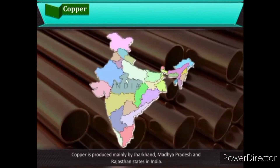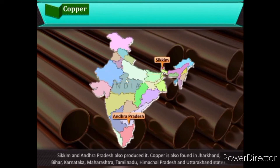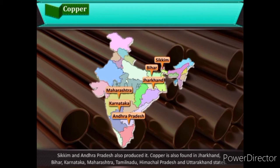Copper is produced mainly in Jharkhand, Madhya Pradesh, and Rajasthan. Sikkim and Andhra Pradesh also produce it. Copper is also found in Jharkhand, Bihar, Karnataka, Maharashtra, Tamil Nadu, Himachal Pradesh, and Uttarakhand.